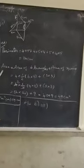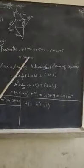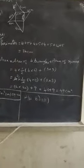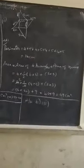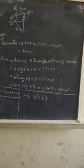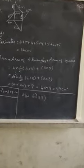For area, write the units as centimeter square; for perimeter, simply write centimeter. The third problem in the photocopy is your homework — complete it and send it to me. Thank you.